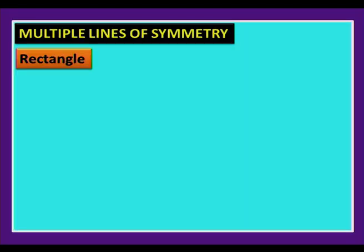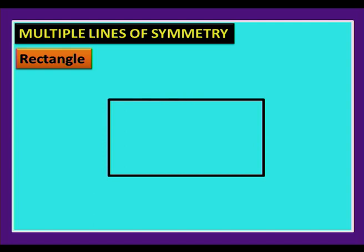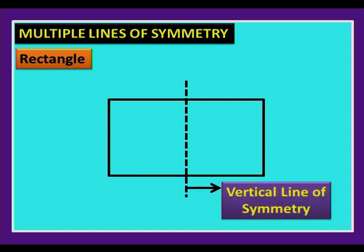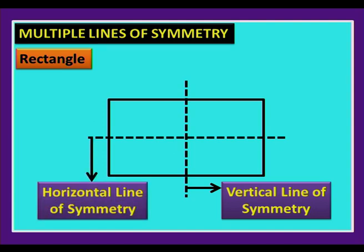Now let us see whether an object can have more than one line of symmetry. Consider a rectangle — drawing a vertical line and folding shows it coincides, giving one vertical line of symmetry. Drawing a horizontal line and folding also shows symmetry. So a rectangle has two lines of symmetry.